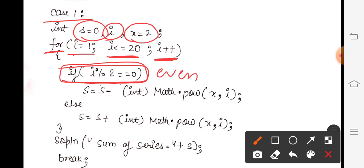So if even, then s = s - Math.pow(x, i). Because we are calculating powers: x^1, x^2, x^3. So whenever power is given there, always use Math.pow. So write it here: Math.pow. What power to calculate? In the base, what is written? x. So write here x. And on top what is there? 1, 2, 3 - this is your i. So x, i.